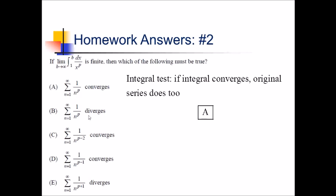Choice B says this would have to diverge. Well, A and B can't both be true — it converges, not diverges. So B is false. The next ones are a little trickier. They're saying 1 over n to the p minus 2 converges, and we also have n to the p minus 1. Could these converge if this converges? They could, but it's all going to depend on how big that p-value is. If this was a p-value of 2, then 2 minus 2 would give us a p-value of 0, and those would definitely diverge by the p-series test. So these aren't necessarily true. And this last one, 1 over n to the p plus 1 diverges — that actually has to be false. If the original converges, p is already bigger than 1, and adding 1 gives another p bigger than 1, which converges by the p-series test. So choice A is the best answer.